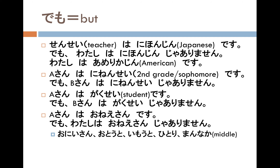A-san wa onesan desu. Demo watashi wa onesan ja arimasen. A-san is an older sister, but I'm not an older sister. If you have a younger sibling, you are an older sister — onesan. If you don't have a younger sibling, you are not onesan. Onisan is older brother, ototo is younger brother, imoto is younger sister. Hitori means no sibling, and mannaka means middle child.